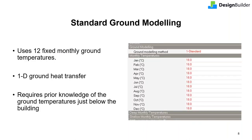Starting with the standard ground modeling. In the standard method, a set of 12 fixed ground monthly temperatures are used. These temperatures define the temperature on the outside boundary of the building's ground adjacent surfaces. Conceptually this is the simplest method since it is based on one-dimensional ground heat transfer. However, it requires prior knowledge of the ground temperature just below the building for accurate heat transfer calculations. Depending on the modeling case, these temperatures can be estimated using rules of thumb, but in practice knowing them accurately is rare.